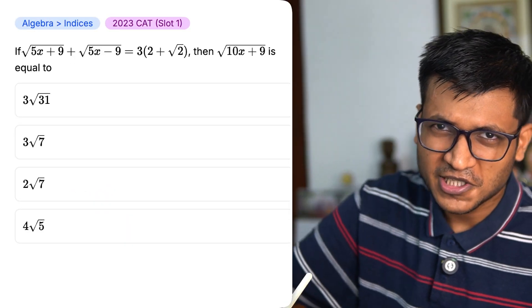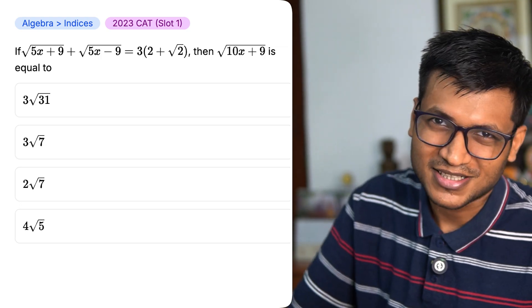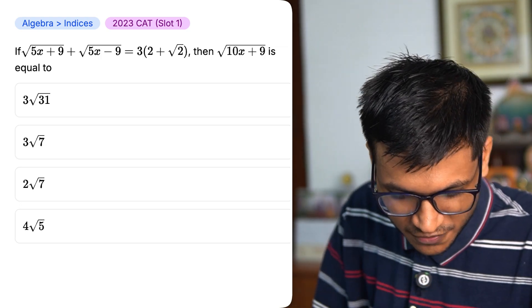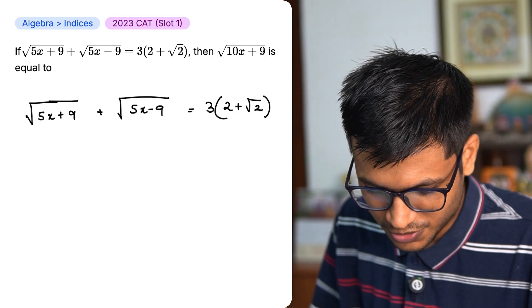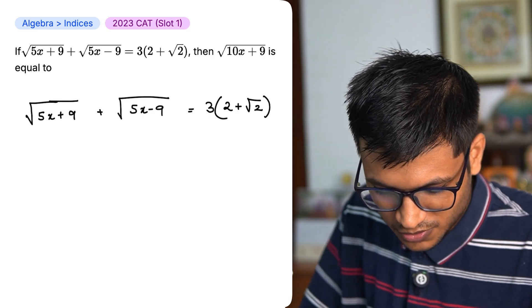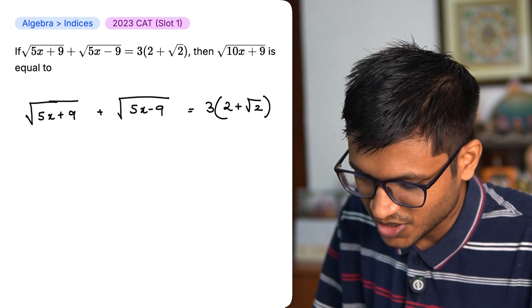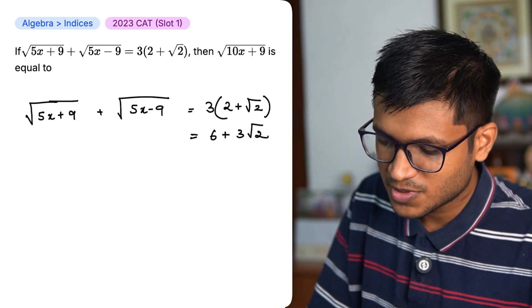If you're not able to solve this CAT previous year problem, that means you just need practice, man. So let's do it. If this plus this equals 3 into (2 plus root 2), then what is the value of root of 10x plus 9? Okay, let me expand this. I get 6 plus 3 root 2.